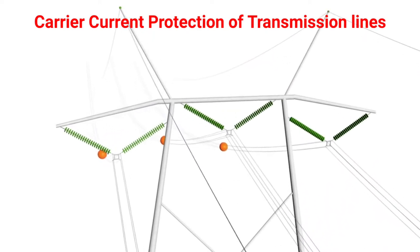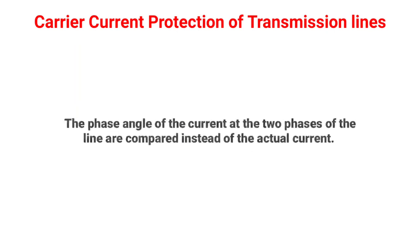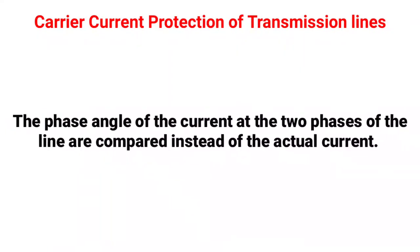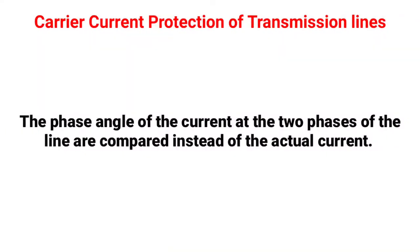In the carrier current protection scheme, the phase angle of current at the two ends of the line is compared instead of actual current. The phase angle of the current between the two ends of the line decides whether the fault is internal or external. That we have to remember.